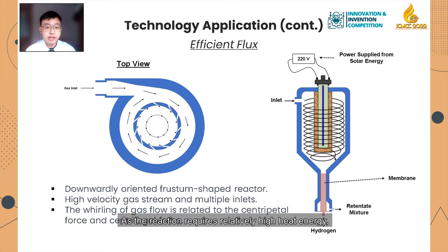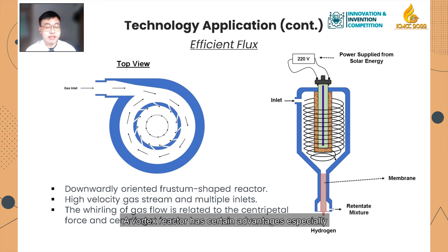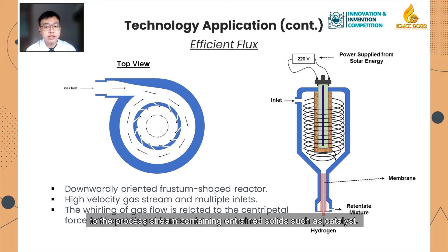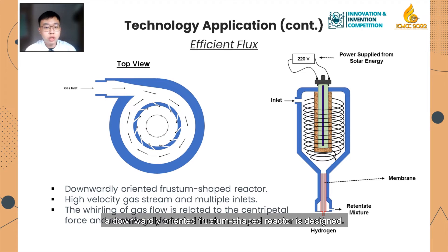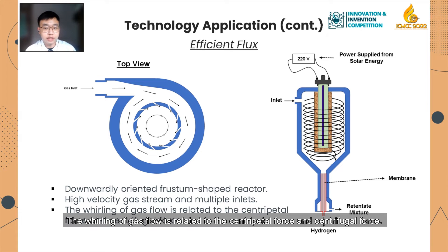As the reaction requires relatively high energy, effective heat flux is needed, which only happens when the mixture is well mixed. The reaction mixture is mixed using the vortex principle, replacing the stirrer. A vortex reactor has certain advantages, especially for endothermic reactions, as enormous heat fluxes can be transmitted to the process stream containing entrained solids such as catalysts. To enhance the vortex effect, a downwardly oriented frustum-shaped reactor is designed. A high-velocity gas stream is forcefully passed through multiple inlets inside the reactor, allowing whirling of the gas flow related to centripetal force.